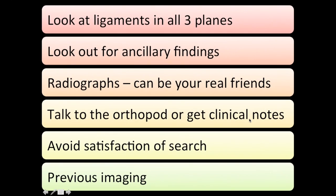Key take-home points: look at the ligaments in all three planes; look for ancillary findings to help diagnose injuries when in doubt; always review radiographs — they can help you pick up small fractures. Talk to the orthopedic surgeon or review clinical notes when uncertain. Avoid satisfaction of search — if you find an ACL injury, look carefully for other soft tissue injuries, otherwise the patient may suffer graft failure. Always look at previous imaging, because ligament remodeling does not necessarily mean the ligament is functionally stable.